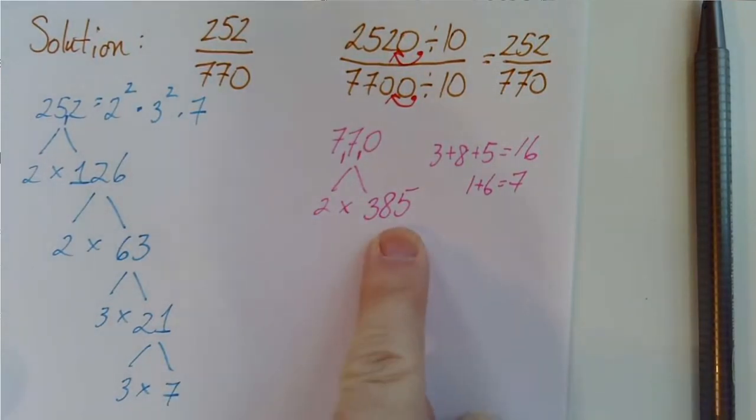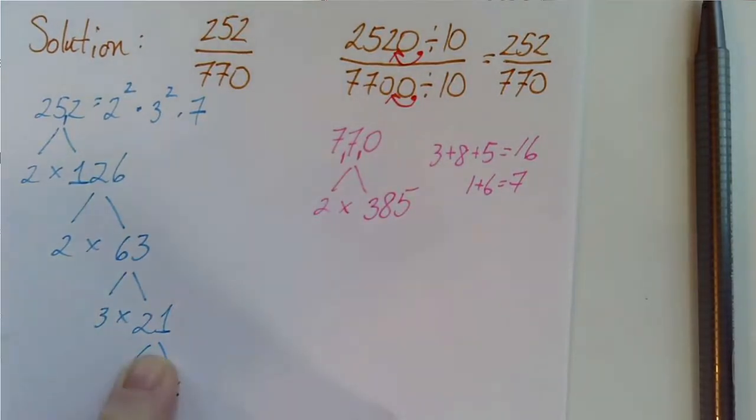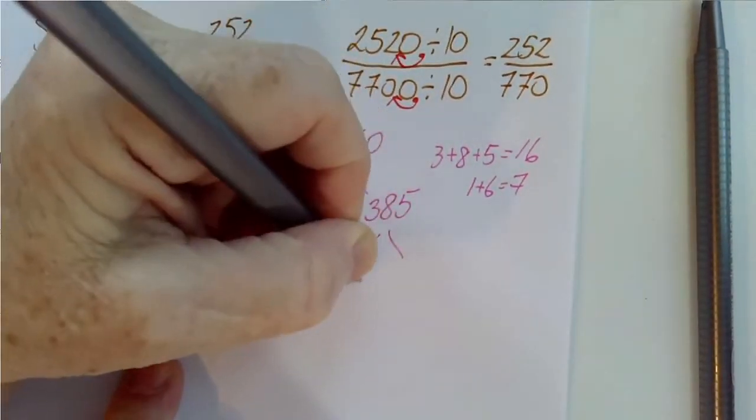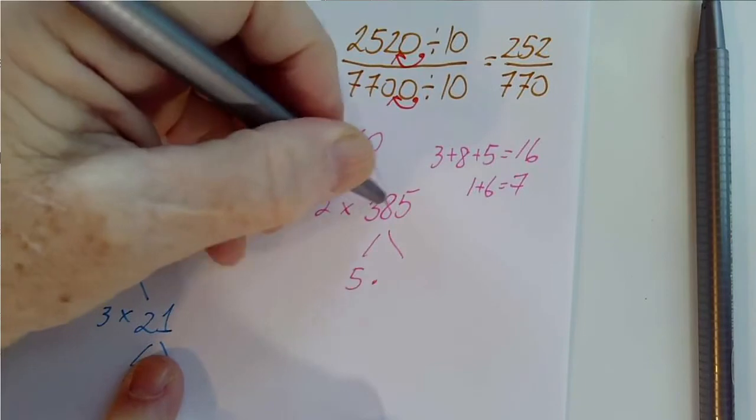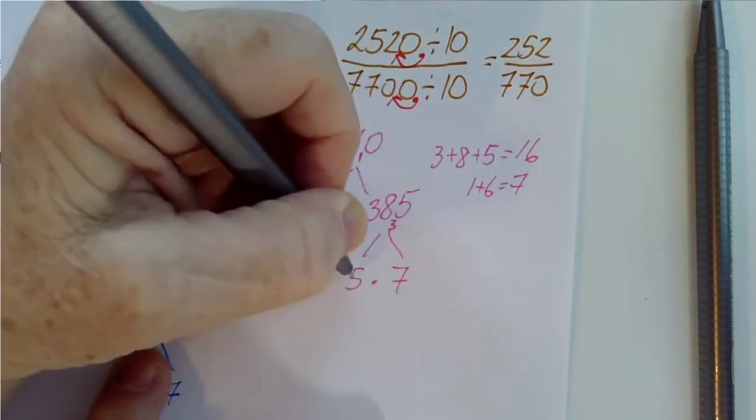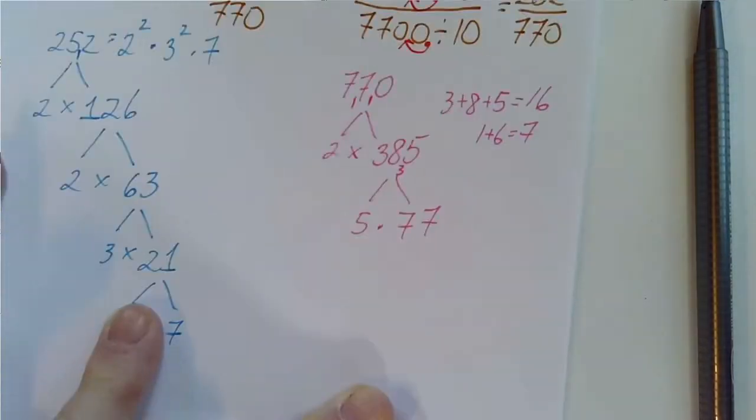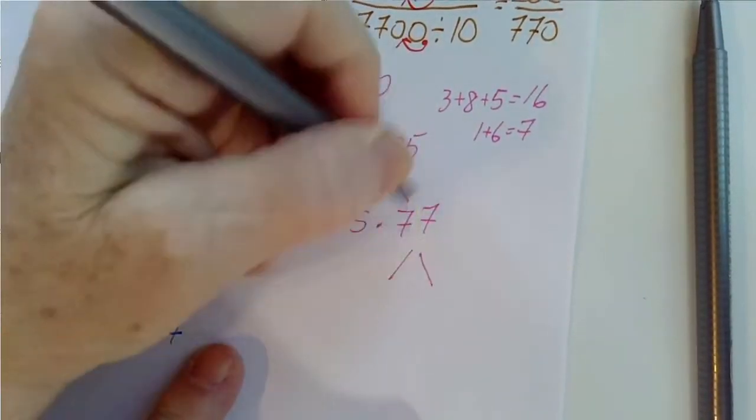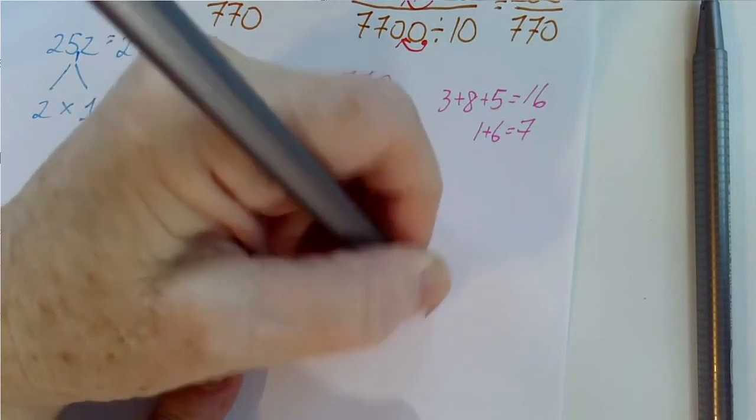But this number ends in a 5 or a 0. So 5 will go into it. 5 goes into 38 seven times with a remainder of 3. 5 goes into 35 seven times. And 77 is a friend. That's 7 times 11.